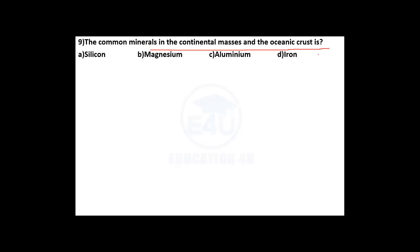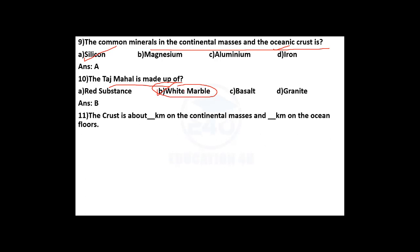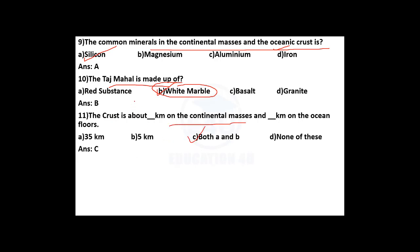The common mineral in both the sub-continental and oceanic crust is silicon. The Taj Mahal is made up of white marble. The crust is about 35 kilometers thick on the continental masses and about 5 kilometers on the ocean floors.